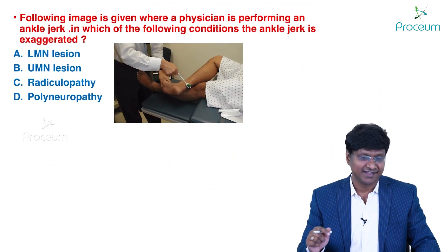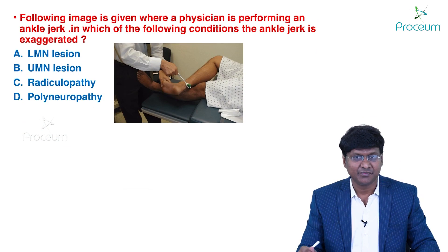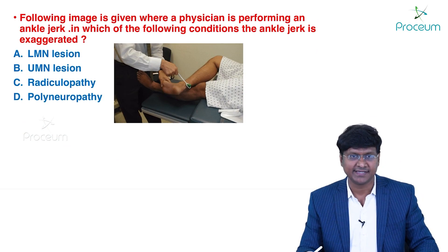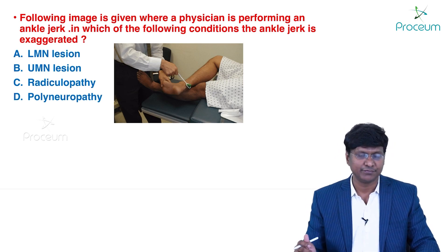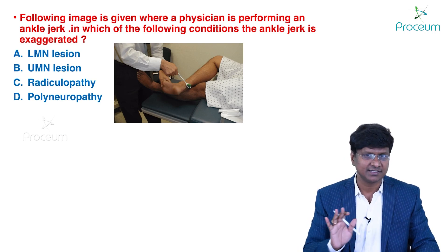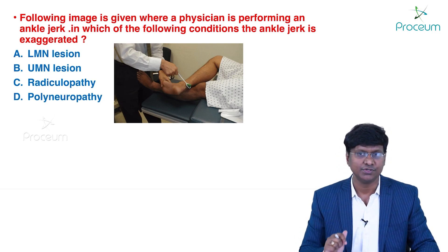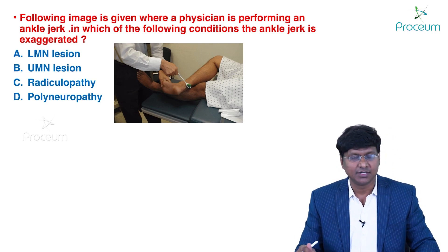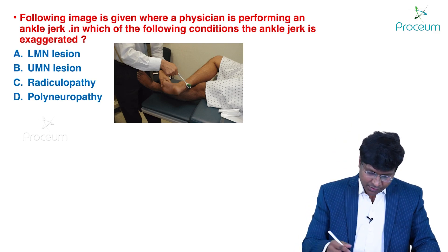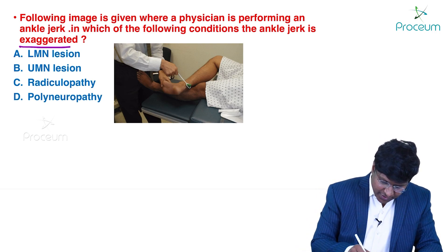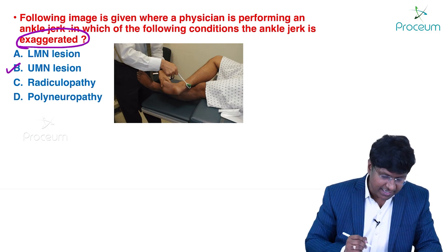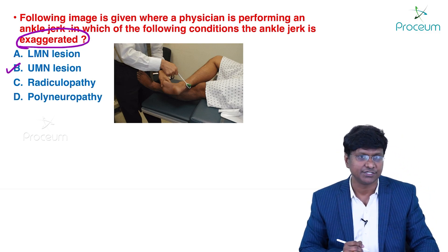The first question shows an image of a physician performing an ankle jerk. In which of the following conditions is the ankle jerk exaggerated? The options are lower motor neuron lesion, upper motor neuron lesion, radiculopathy, and polyneuropathy. In upper motor neuron lesion, you have exaggerated reflexes.